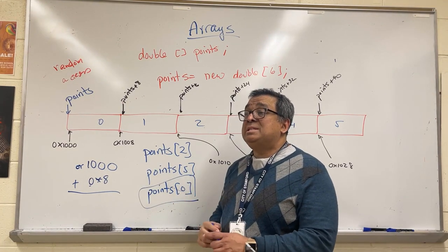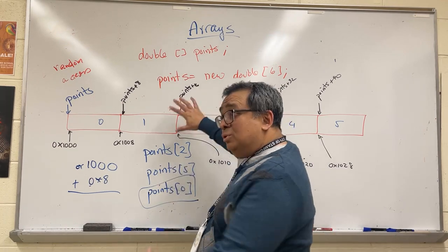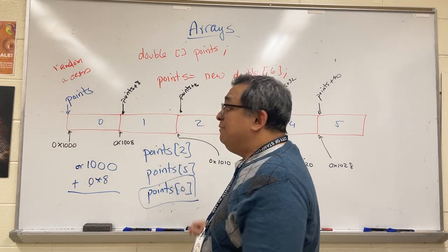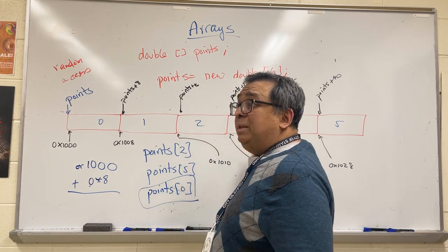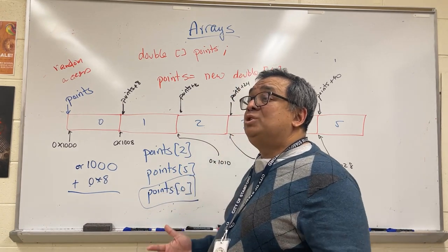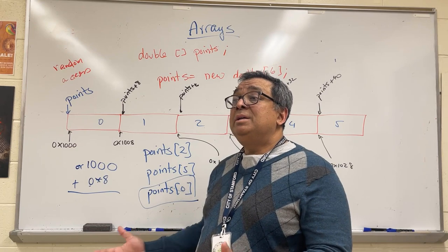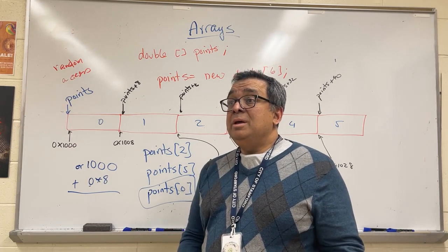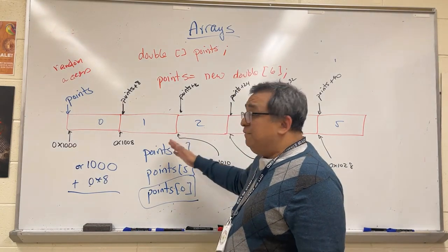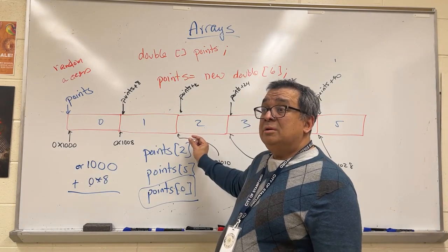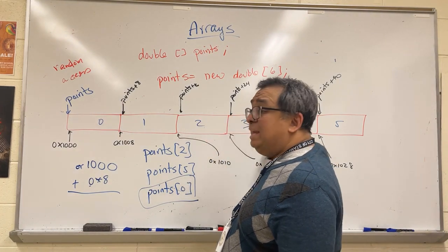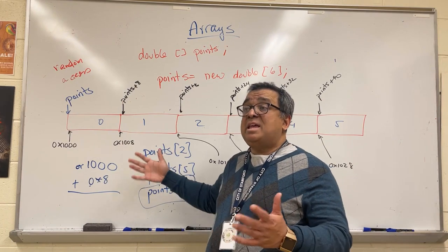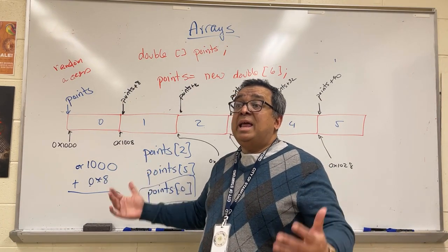So therefore, the conclusion from all this random access stuff is: no matter which element I want, it takes the virtual machine the same amount of time to get it for me. And that's powerful because that amount of time is not only fixed but it's short, and so I can access any element of the array as fast as I access any other element, and I can access it quickly.